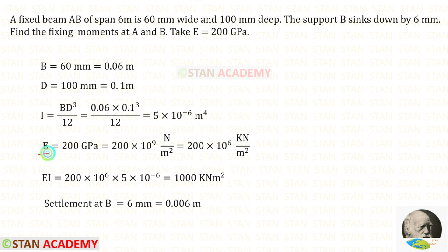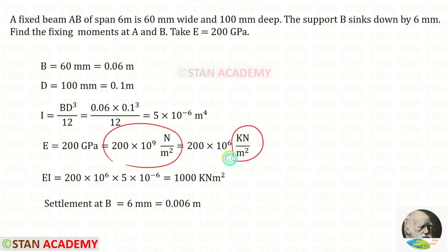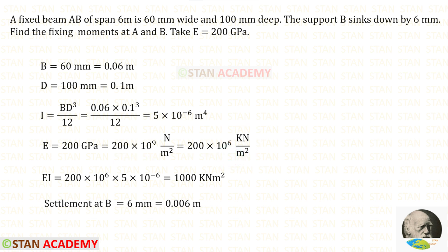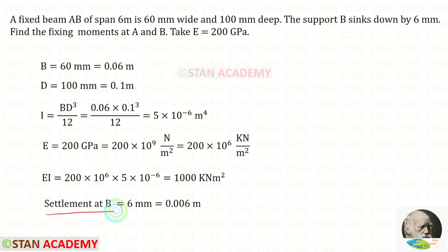The Young's modulus E is given as 200 gigapascal. We know that giga is 10⁹ and pascal is newton per meter square. We need to convert this into kilo newton per meter square. We have to divide this value by 1000, so that we will get 200 × 10⁶ kilo newton per meter square. Multiplying Young's modulus with the moment of inertia we get EI = 1000 kilo newton meter square. The settlement at B is given in millimeters; dividing by 1000 we get 0.006 meters.